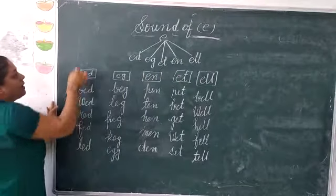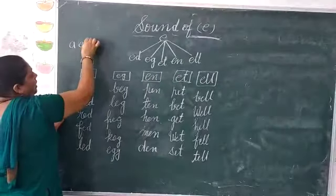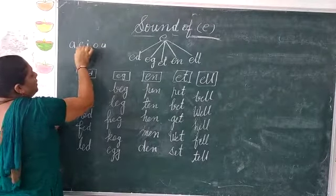How many sounds do we have? A, E, I, O, U. Five sounds do we have?